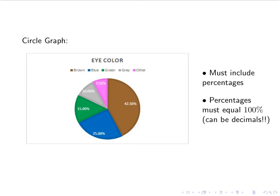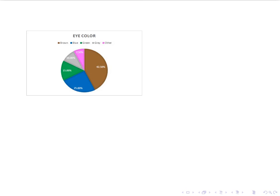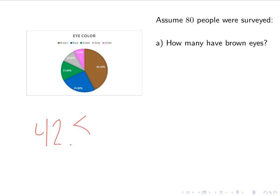So again, we can have some questions. So assume that 80 people were surveyed. How many have brown eyes? So in order to answer this question, the question turns into what is 42.5%, because that's the brown, of 80. What is 42.5% of 80? We can plug that into our calculators. And we should get 34.